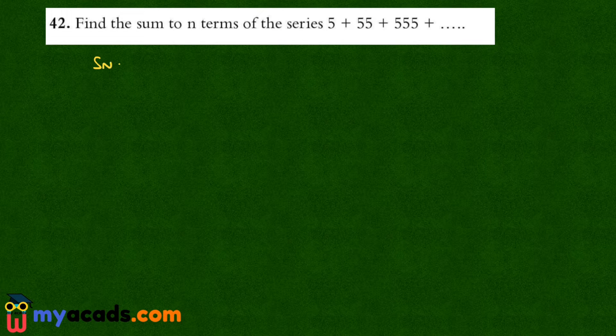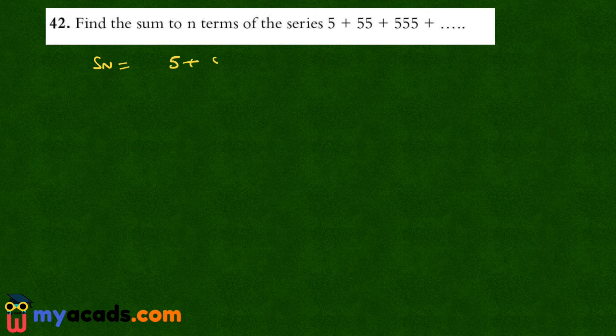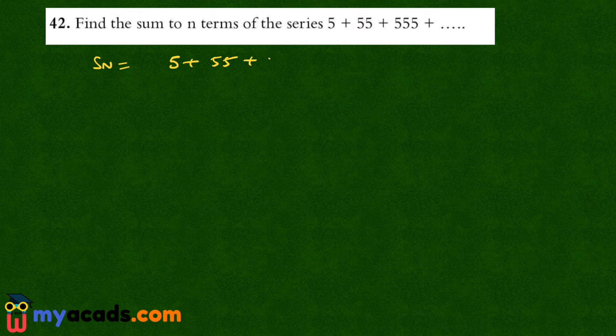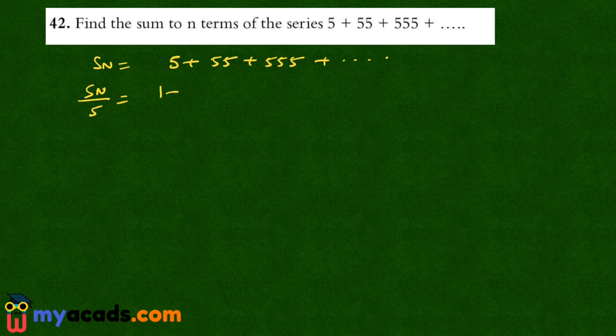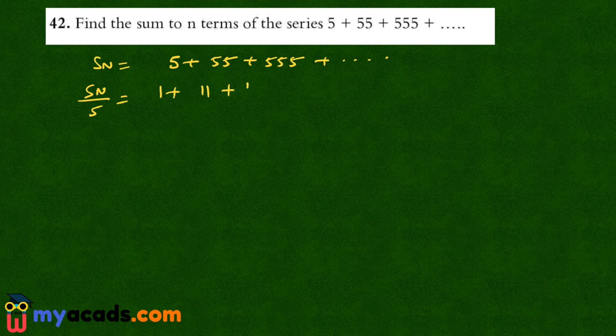So my sum is 5 plus 55 plus 555 and so on. Now my Sn by 5 will be 1 plus 11 plus 111 and so on. Now I can multiply both sides by 9.